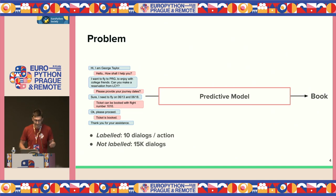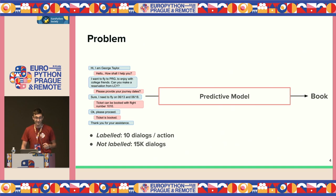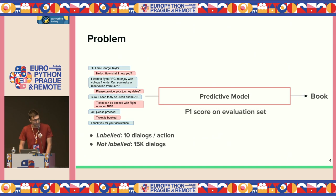Today we'll be having a few-shot problem, where Python Air provided just 10 labeled dialogues for each action, and then gave us 15,000 dialogues for which we don't know the actions. We agree to evaluate this predictive model with F1 score on a holdout evaluation set.